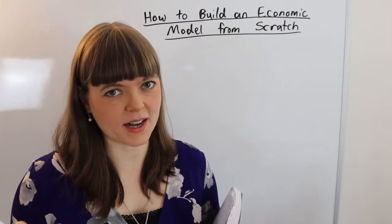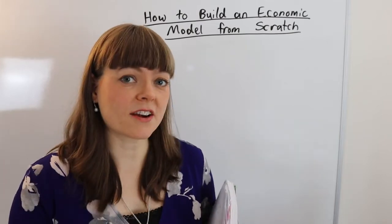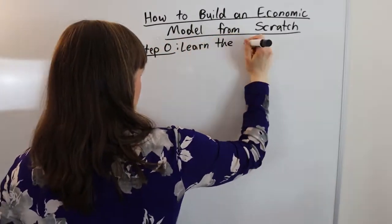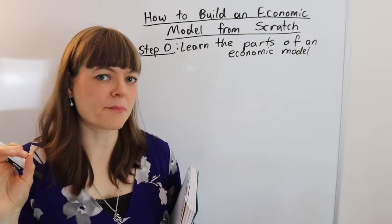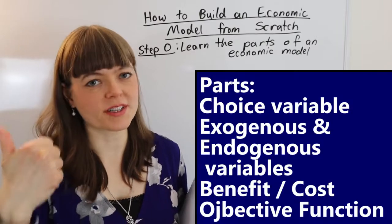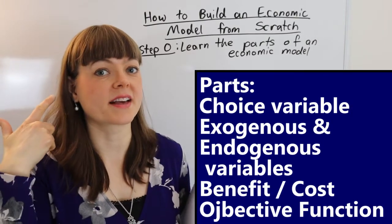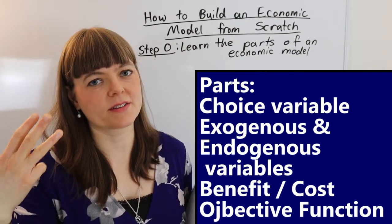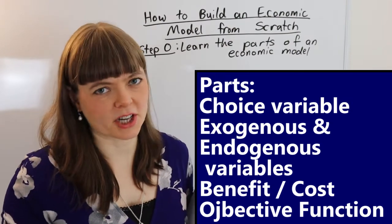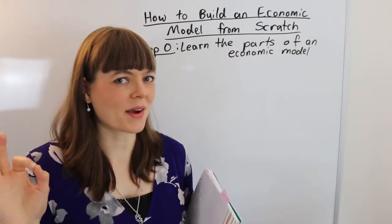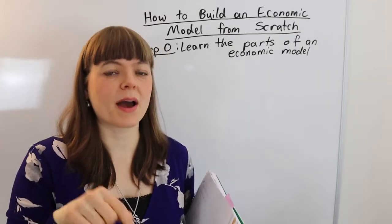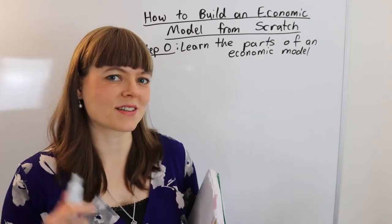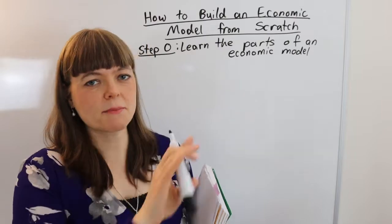Now before you even start building an economic model, you do need to understand the parts. So I'm going to let this be step zero. And when I say the parts, I basically just mean what is a choice variable? What is an exogenous variable? What is an endogenous variable? What is a benefit? What is a cost? What is an objective function? Those are basically the parts. And I'm not going to go over that here, but I will put a link below to a video or two that will help you orient toward the parts. That's step zero.